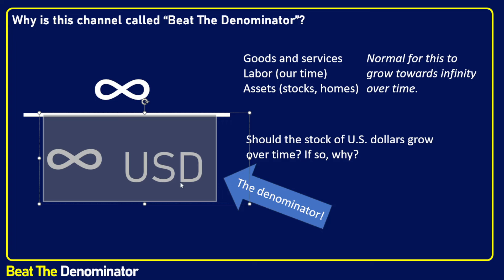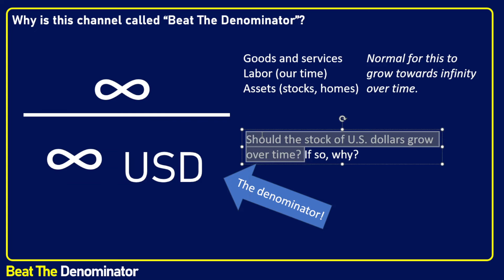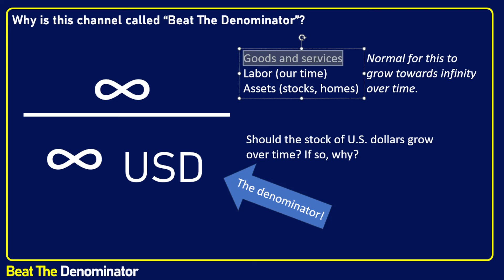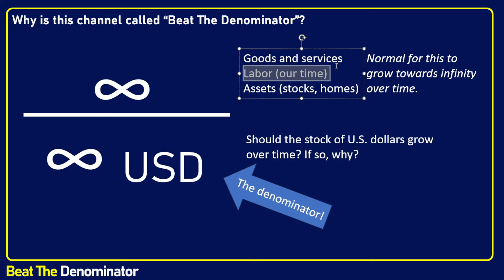The question we have to ask is: should that denominator be growing over time, and why? If you're from the Austrian school of thought, if you're a Bitcoiner, you obviously view this growth in the US dollar as theft, pure and simple. The normal state of the world — at least as Austrians view it, and I think as a lot of engineers view it — is that goods and services are going to be more and more common no matter what, because of technology. Labor is also becoming more common because there are more and more people.